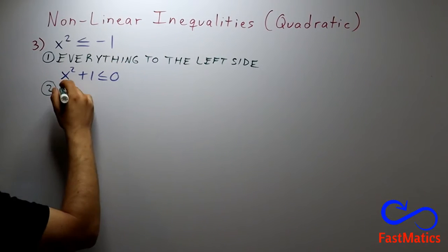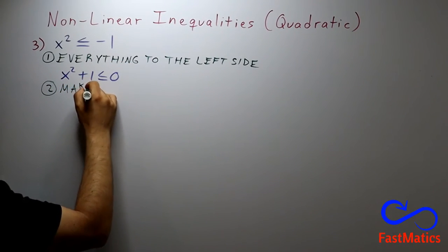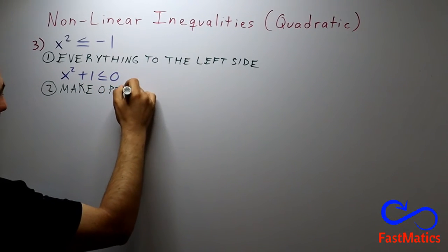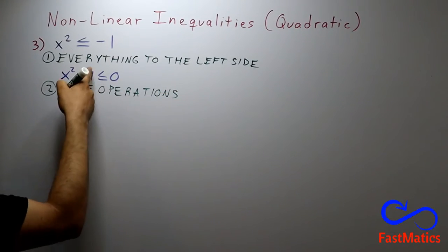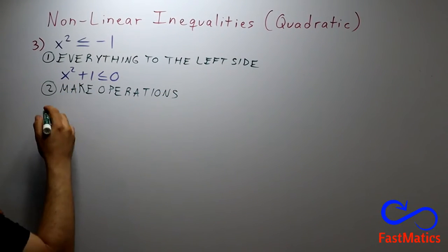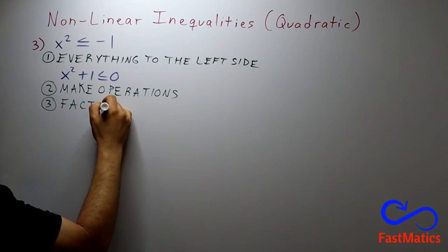And second step, make operations. But we have no operations to do. So, third step, factorize.